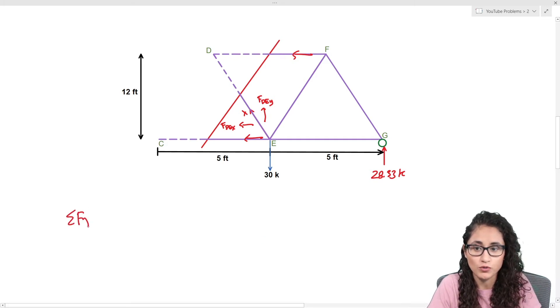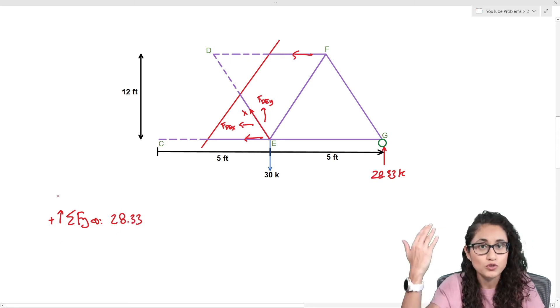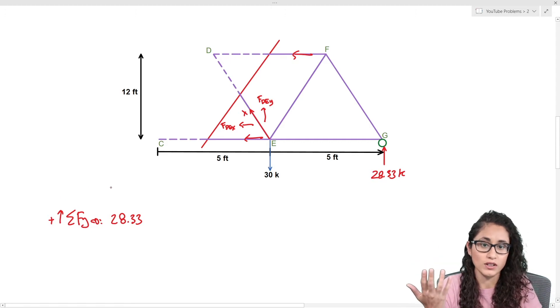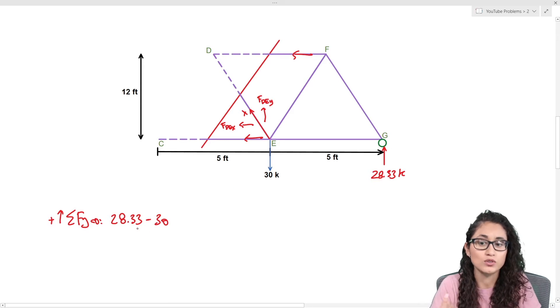Let's do the summation of the forces on the Y equals to zero. We're going to assume going up to be positive. We're gonna have GY which is the reaction which is 28.33. It's positive because we're assuming going up is positive. Then we have minus 30 which is the external force. It's minus because it's going opposite of our sign convention. Then we're gonna have the force DE in the Y direction.